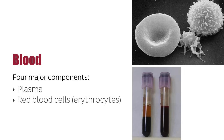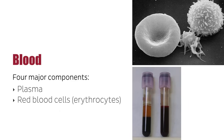Red blood cells, which are also known as erythrocytes, are formed in the bone marrow and function mainly as oxygen carriers. White blood cells, or leukocytes, make up the body's immune system by producing antibodies and helping destroy harmful microorganisms. These cells are also created in the bone marrow. Lastly, platelets are cells that clump together to form blood clots and help protect the body by preventing bleeding.